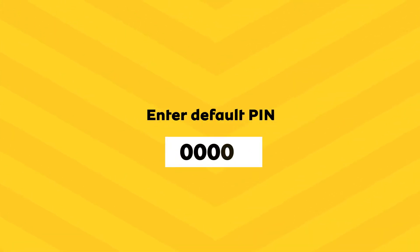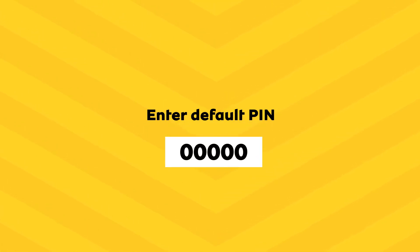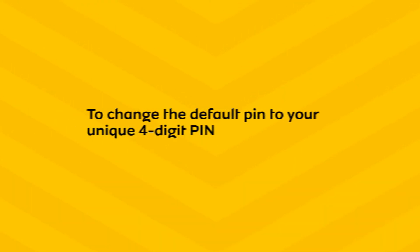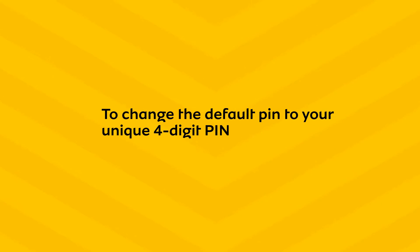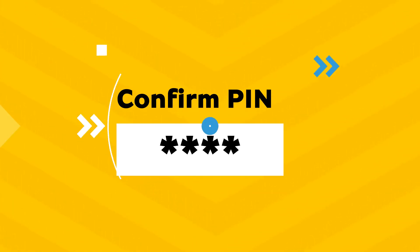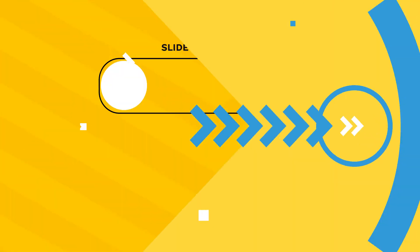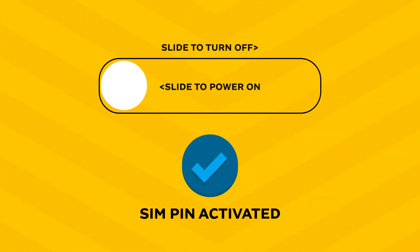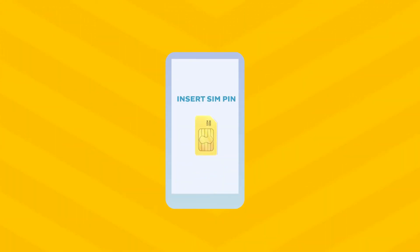Insert your MTN default SIM card PIN, which is 0000. Tap on Change SIM card PIN to change the default PIN to your unique 4-digit PIN. Confirm your 4-digit unique PIN. Power off and on your device to check if the SIM PIN is activated.